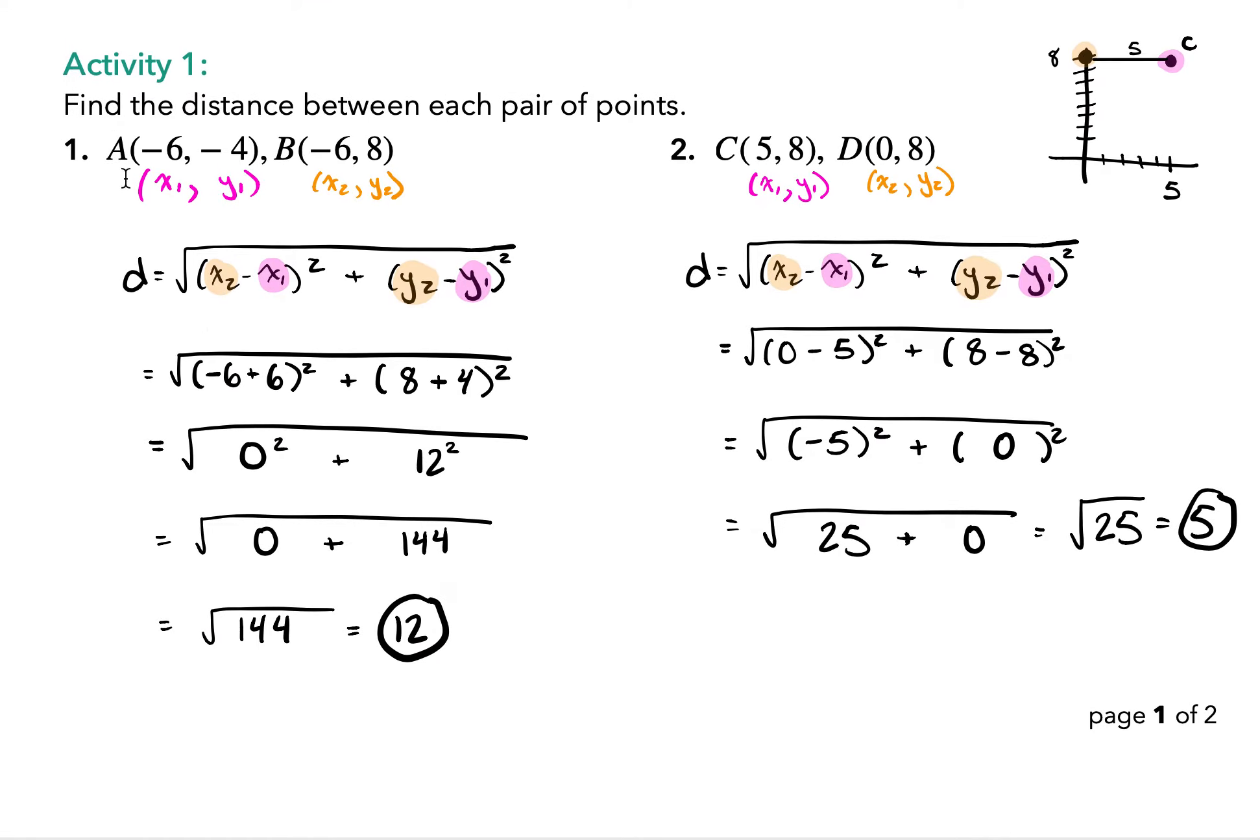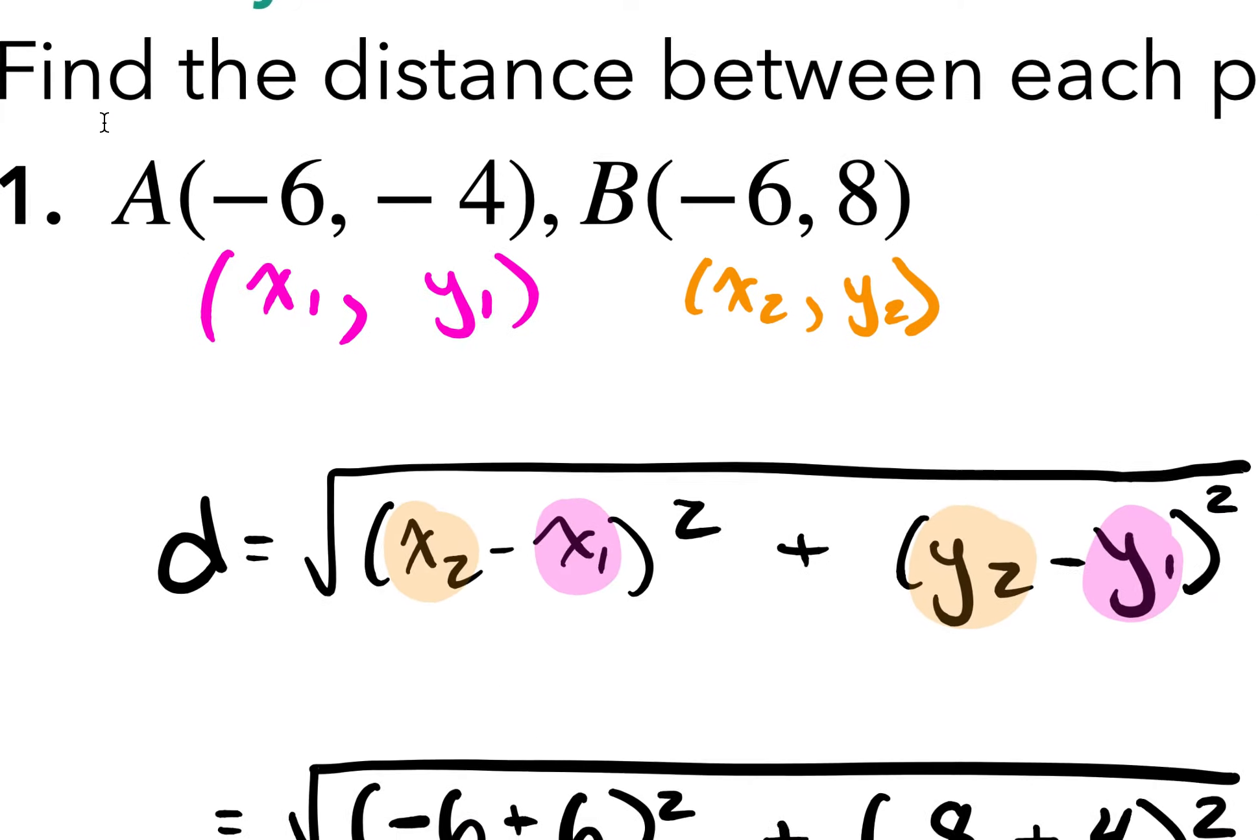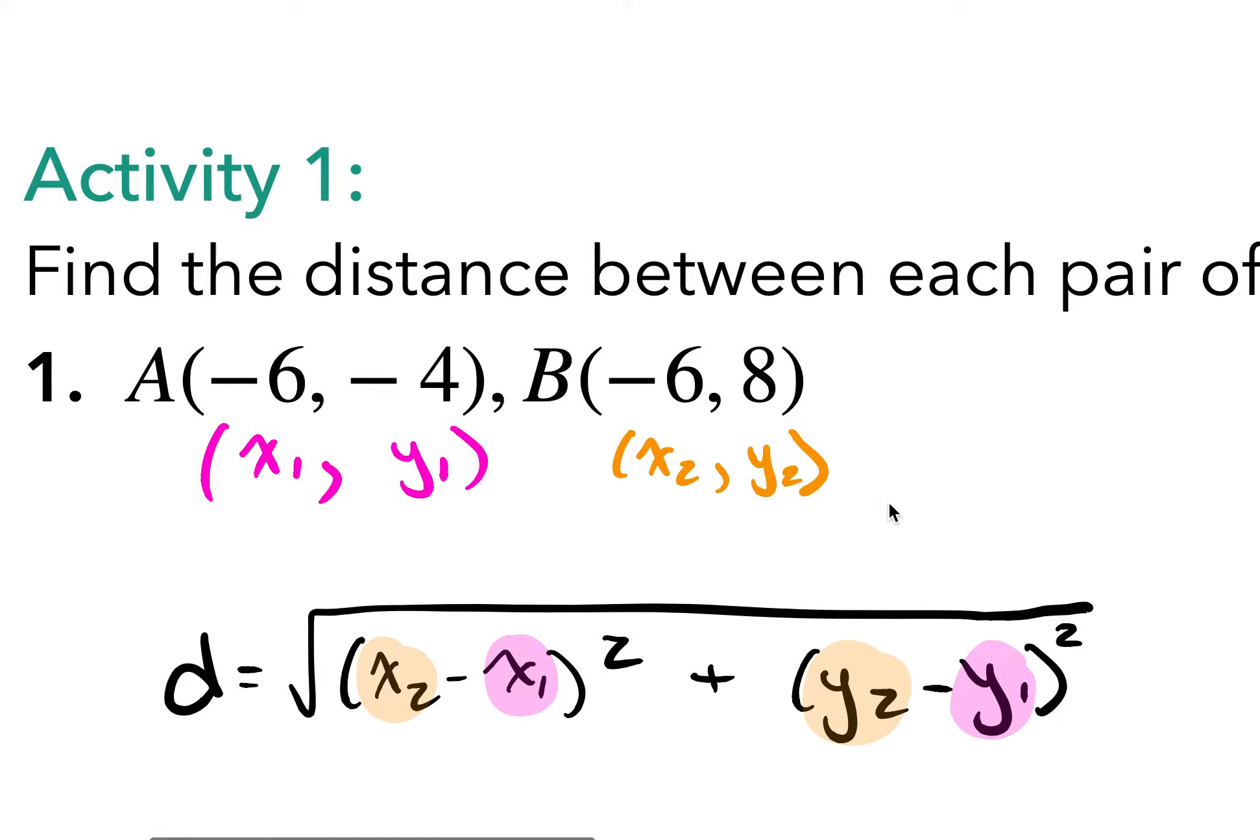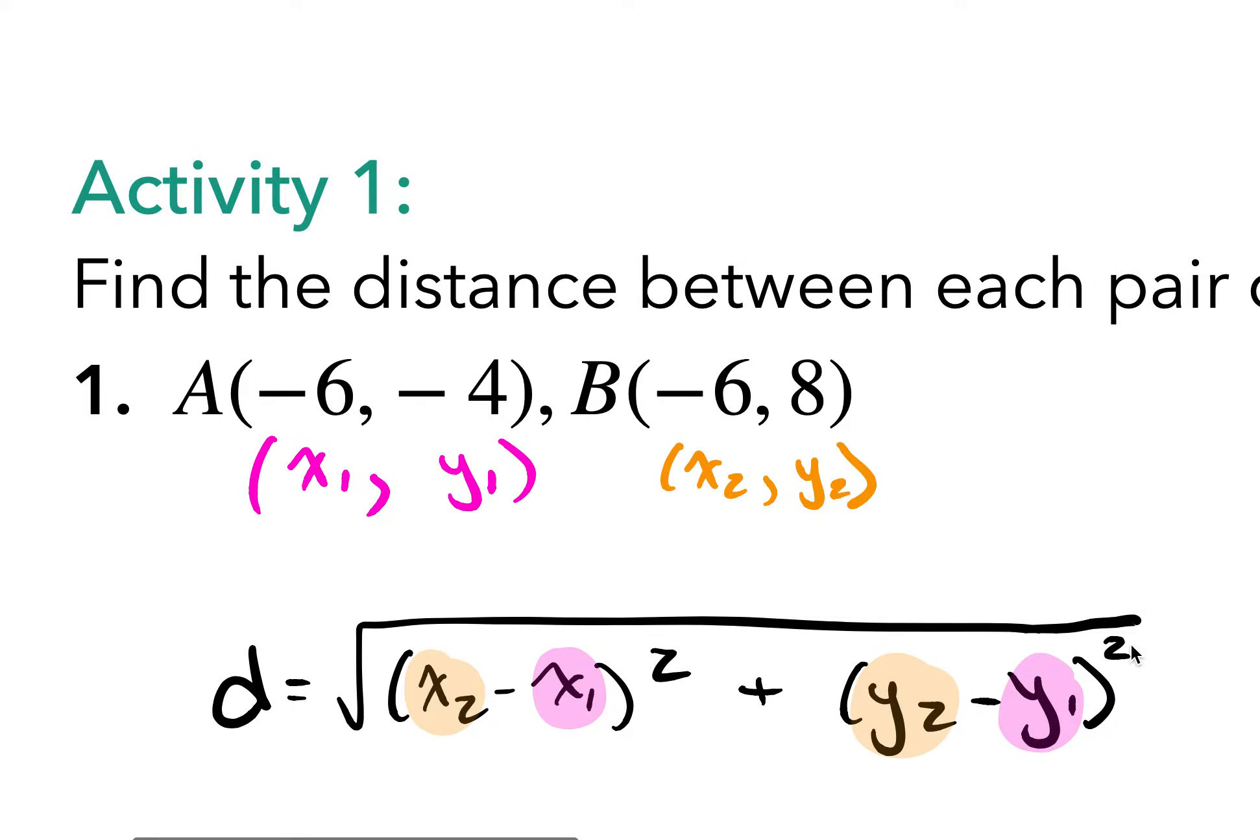Let's go ahead and plug in a couple examples. For our first one, we find the distance by first labeling what is what. We want to figure out what information do I have and how can I use it? So negative 6 is our x1, negative 4 is y1, negative 6 is x2, and 8 is y2. So we copy the distance formula down first. That way, in copying it down, it'll help you remember it too.